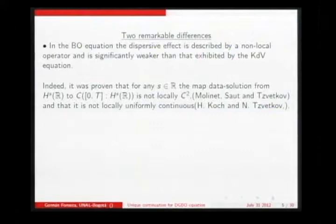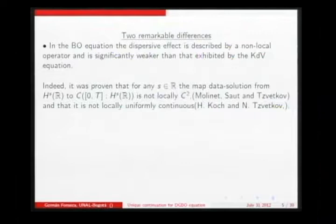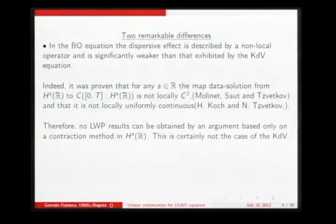There are two main differences between the two flows. The first is related to the non-smoothness of the symbol. For KdV, it's xi cubed, which is completely smooth. But for A between zero and one, we don't have even C^3 continuity, which reflects the fact that the flow is not a smooth application — it's not even C^2, as shown by Molinet-Saut and Tzvetkov, and not even locally uniformly continuous.